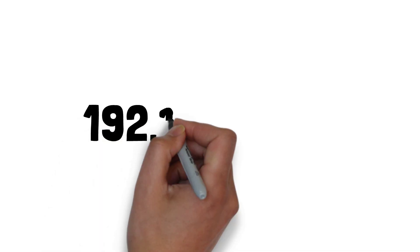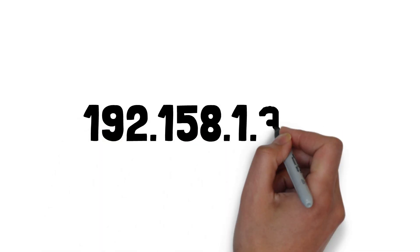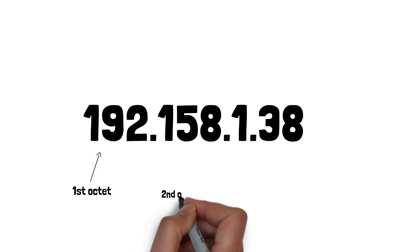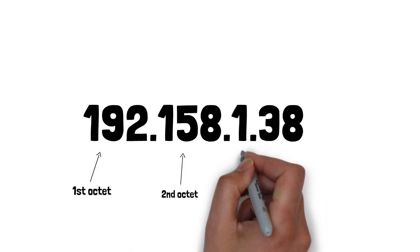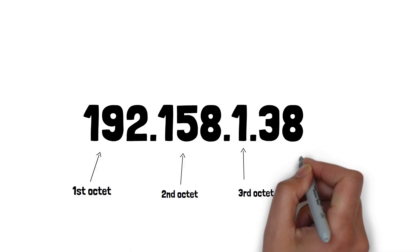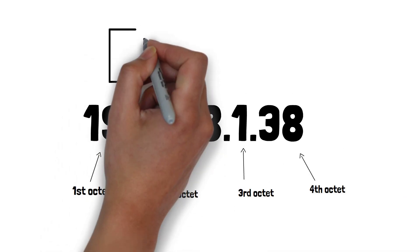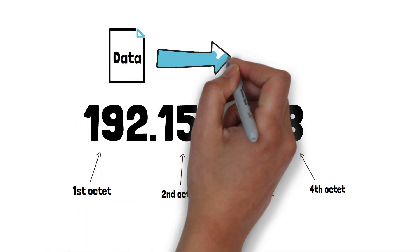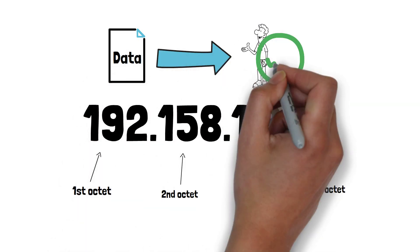An IP address is a string of numbers assigned to all internet-connected devices, separated into four sections by dots, with each section being known as an octet. This is used to identify your computer on the internet so any data that's meant for you arrives to your device and not another random device somewhere else in the world.